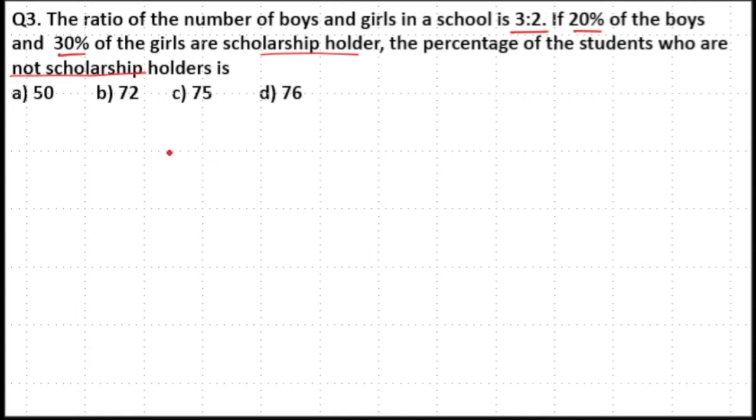There are boys and girls in the ratio 3 to 2, and 20% of the boys and 30% of girls are scholarship holders. That means 80% of boys and 70% of girls are not scholarship holders. So here I will multiply the ratio with 100, that is 300 is to 200.